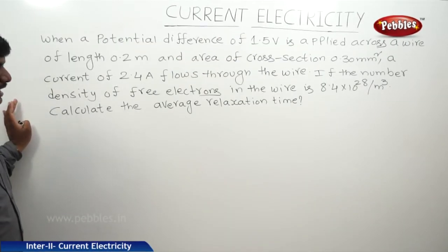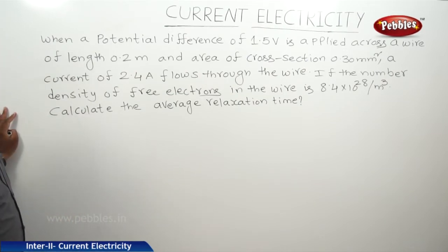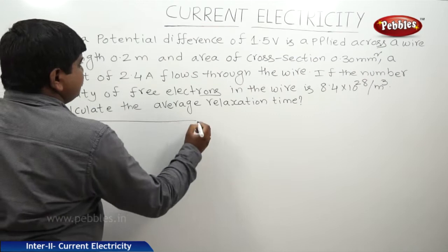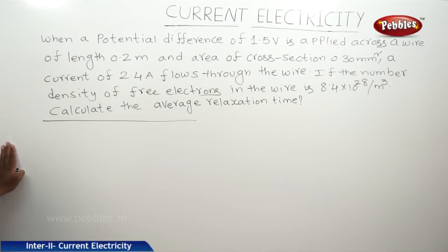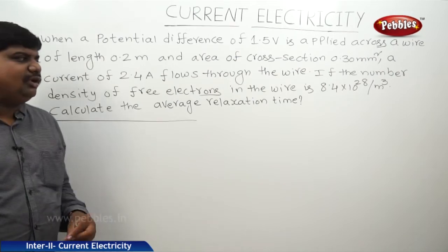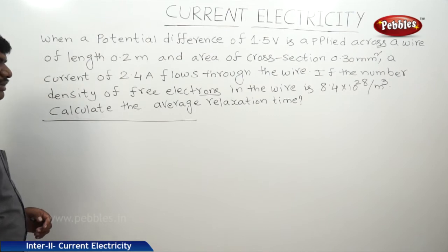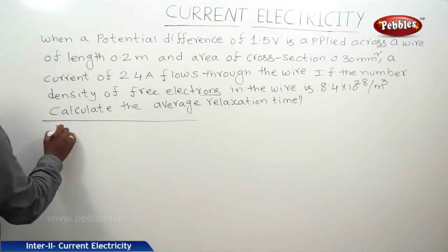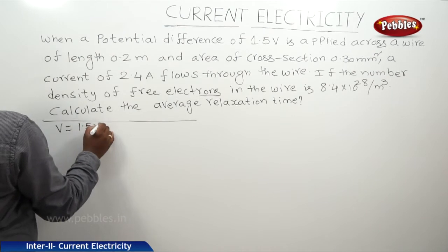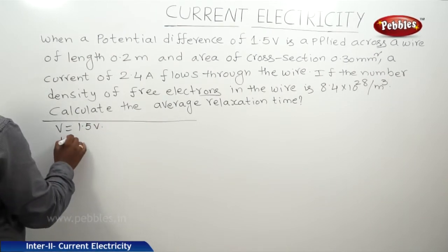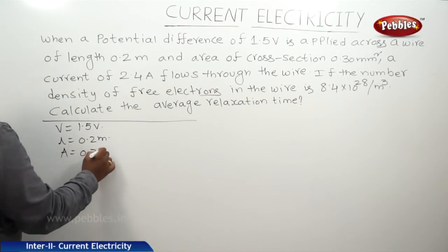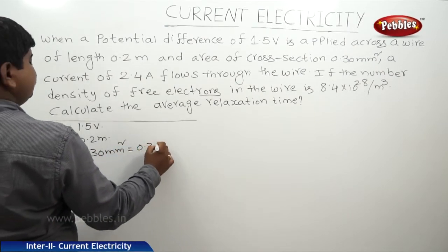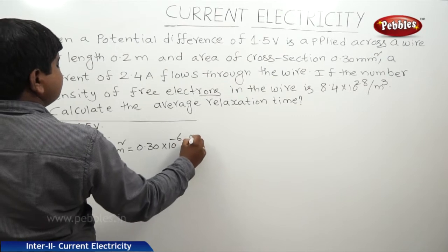The next problem is based on the concept of average relaxation time and current density. When a potential difference of 1.5 volts is applied across a wire of length 0.2 meters and area of cross-section 0.30 millimeter square, a current of 2.4 amperes flows. The area is 0.30 into 10 to the power of minus 6 meter square. The number density of free electrons n is 8.4 into 10 to the power of 28 per meter cube.